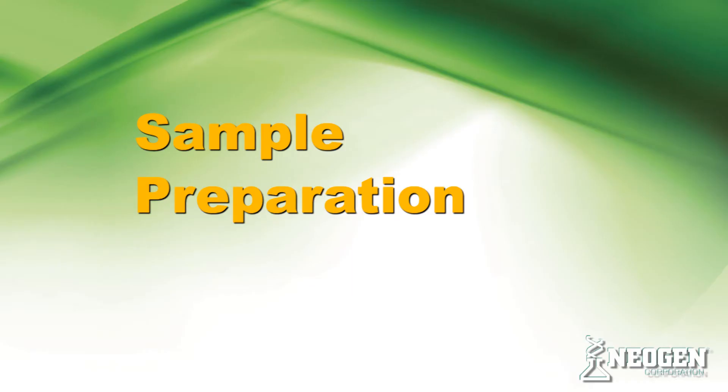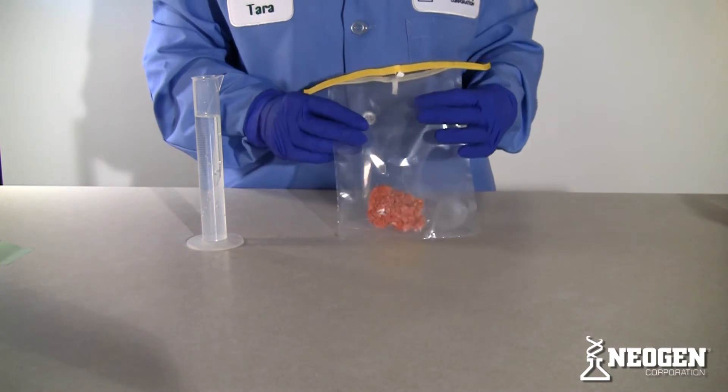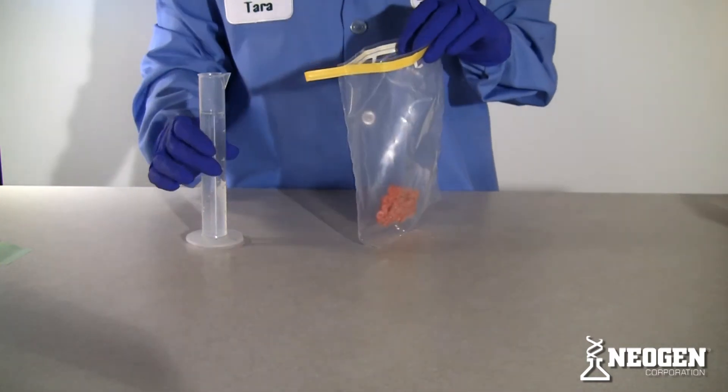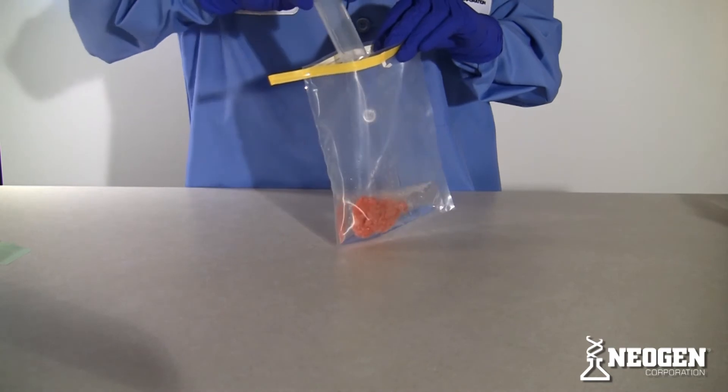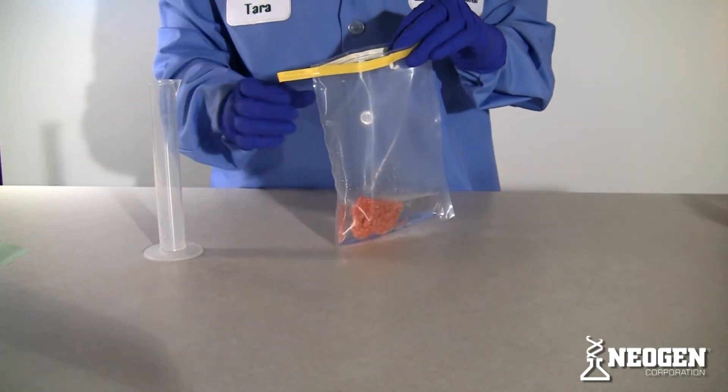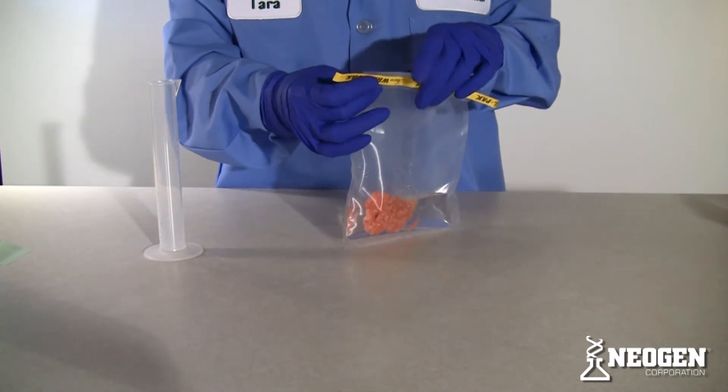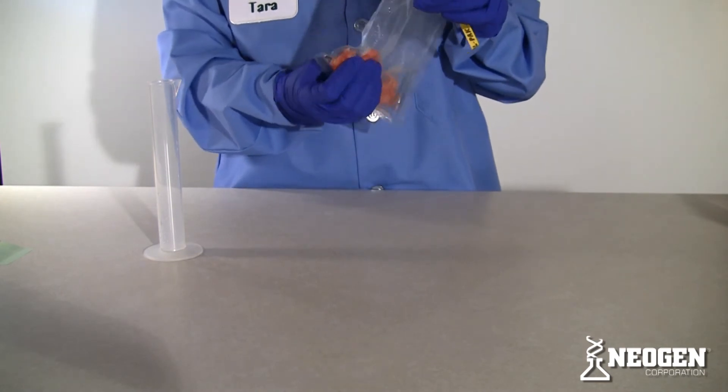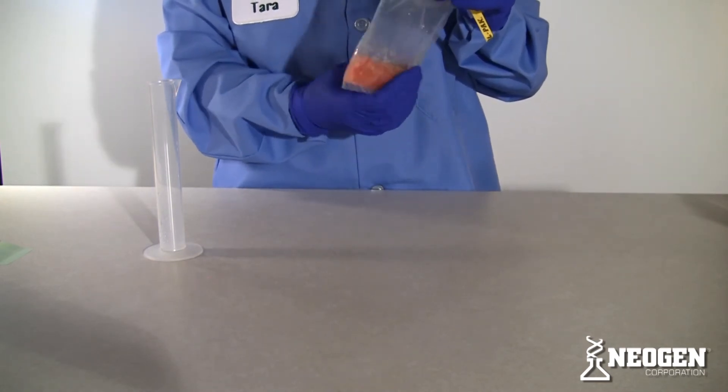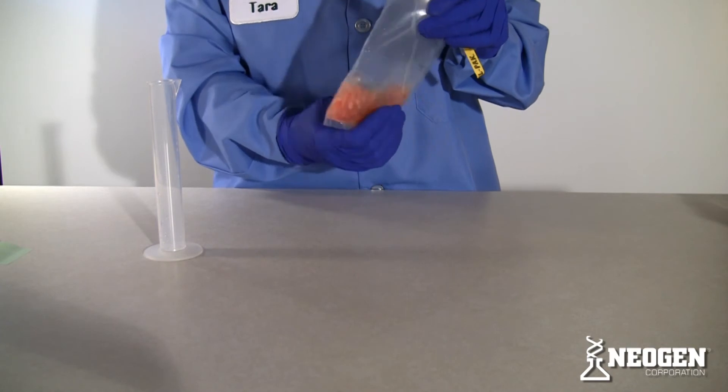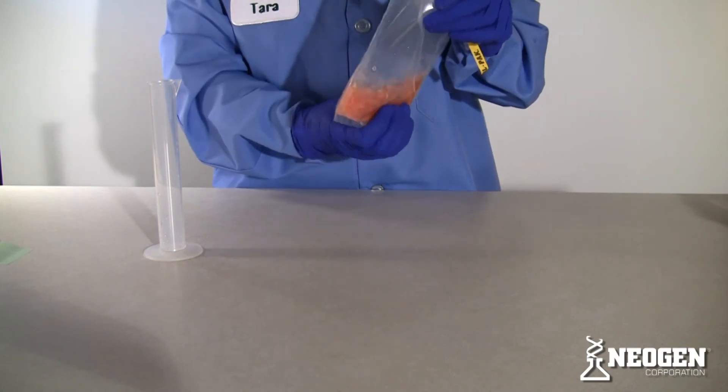Sample preparation. Samples should be homogeneous. Combine a representative sample to approximately ten times its weight of water and mix well. Minced or other similarly blended materials need no further preparation. Intact meats should be minced or finely chopped to improve the extraction process.